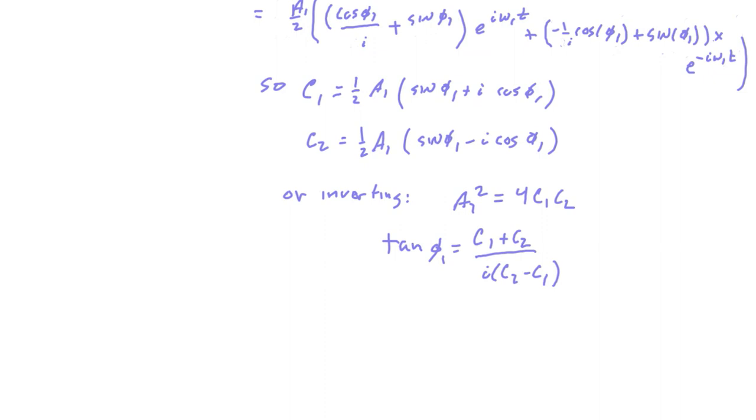And then to get the tangent, what I would do, I'm leaving out a step, I would find sine and cosine in terms of the sum and difference of C1 and C2, divide them out, and find out that the tangent of phi is this ratio of the C coefficients.